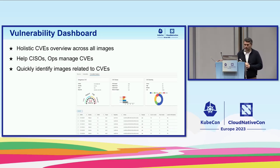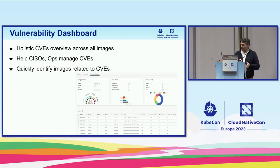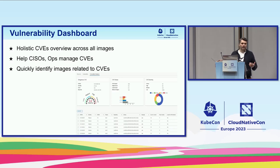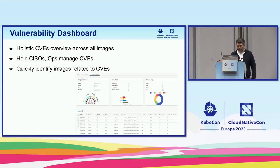The next thing we are working on is a vulnerability dashboard. Right now, vulnerabilities are attached to images, so if you want to know about vulnerabilities, you have to look into the image and dive into them from there. We'd like to turn it around — to see what vulnerabilities we have and which images they affect. We're providing a vulnerability dashboard that allows the CISO and ops people to navigate vulnerabilities and get a better overview. There is already an option to export vulnerabilities, and we would like to have that analytics view also directly in Harbor.